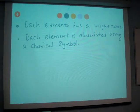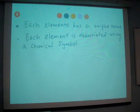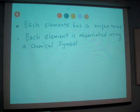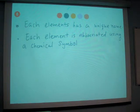Okay, so each element has a unique name and is abbreviated using its chemical symbol. Now, how do we write symbols?